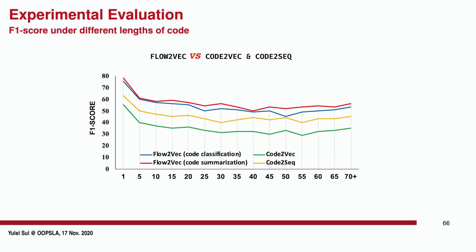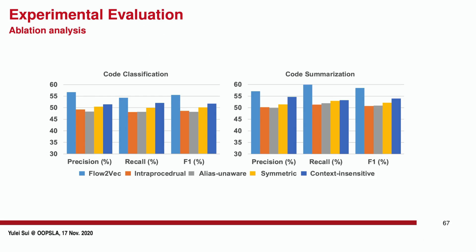This figure gives F1 scores under different code lengths. Overall, flow-to-vec outperforms code-to-sequence under all code lengths.